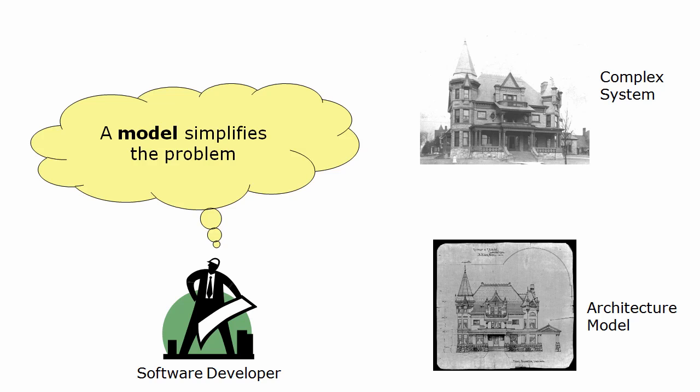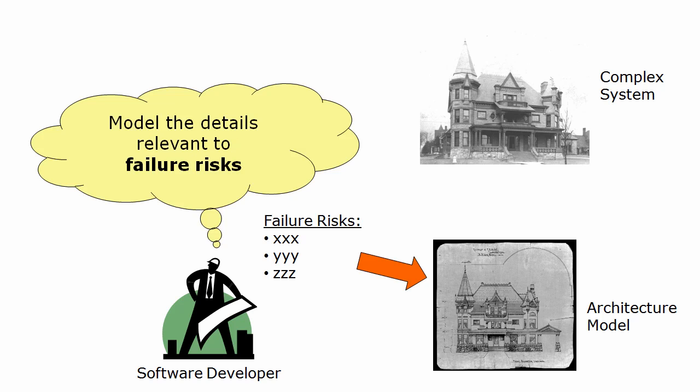The alternative is to build a model that simplifies the problem. In our field, this is considered unusual, yet it's standard practice in every other engineering field. But a model of what exactly? We can't consider every possible failure, just like we cannot understand everything. So we decide which failures are possible or likely — that is, the risks — and we build a model that lets us reason about those risks.